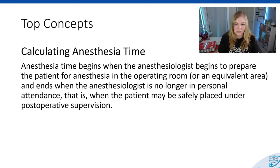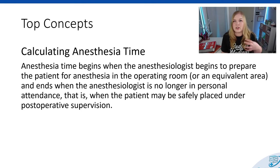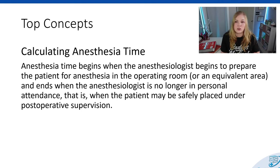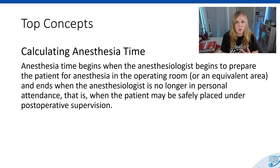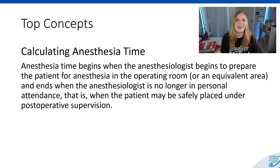Time is a big concept in anesthesia — not just calculating the total time, but converting it into units. When we calculate anesthesia time, we start when that anesthesiologist begins preparing the patient in either the operating room or surgical area, and it ends when the anesthesiologist is no longer in personal attendance, when that patient is wheeled in for post-operative supervision. The AMA and the ASA recommend that one unit of time equals 15 minutes. So if we're billing for one hour, that's four units; two hours would be eight units.